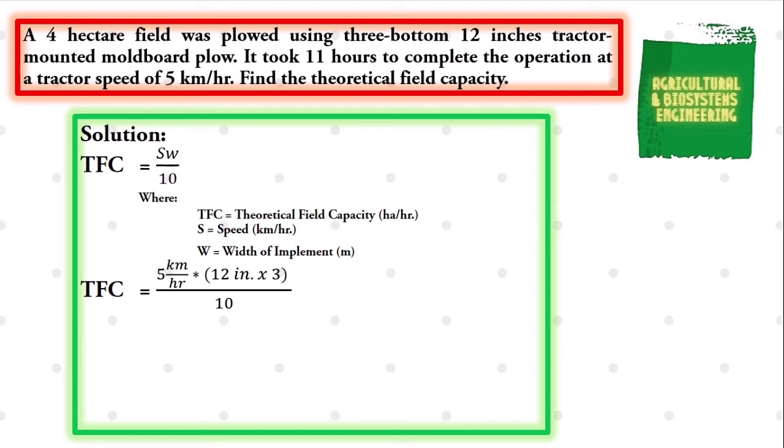We have to multiply it by 3 because our tractor had 3 bottoms moldboard plow mounted to it, all over 10. We simply solve and we have 5 kilometers per hour multiplied by 36 inches.